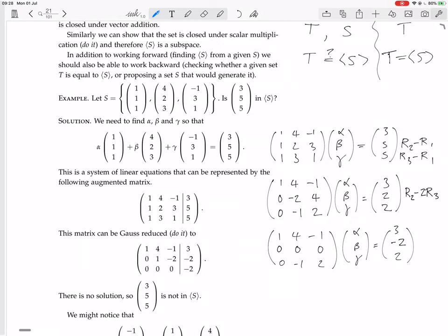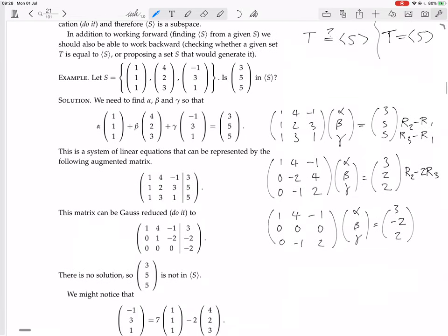So in other words, there's no solution to the system. The system's inconsistent. So that means that this vector (3, 5, 5) is not in the set generated by S.